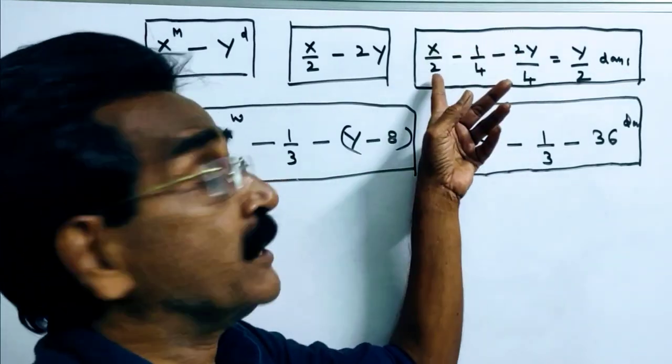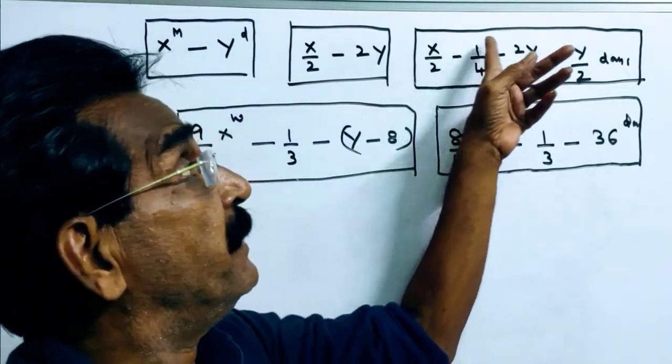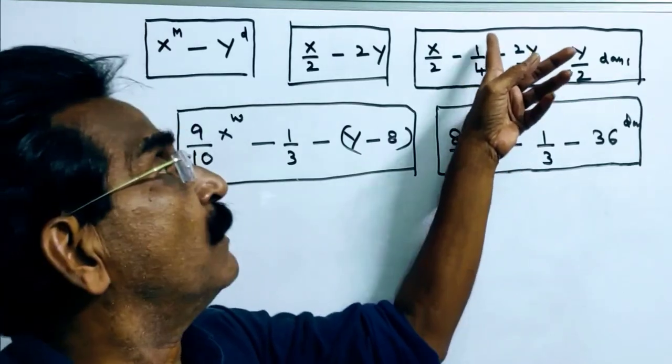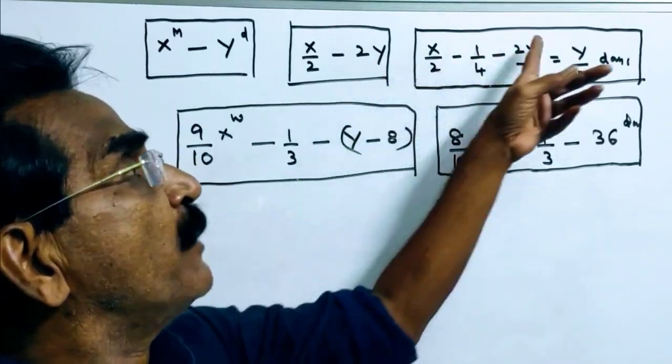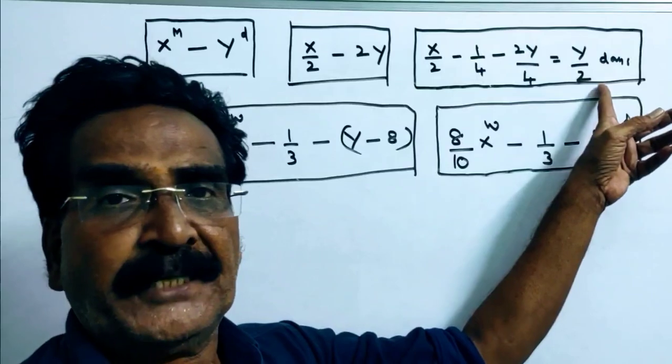Friends, X by 2 men can complete 1 by 4 work in 2Y by 4, that is equal to Y by 2 days.